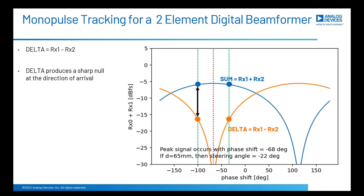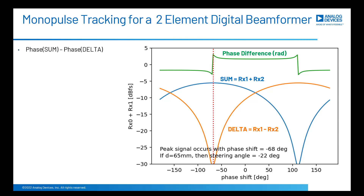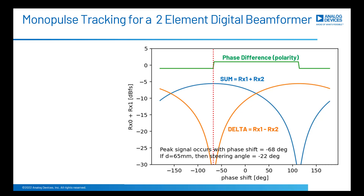Here's the key to monopulse tracking: if we also look at the phase difference between the sum curve and the delta curve, we get a curve that goes from plus pi radians to minus pi radians. The direction of arrival line is exactly at the point where the phase difference switches from negative to positive. The difference between sum and delta tells us if we are off target, and the phase difference tells us which way to move the beam. If the phase difference is negative, increase the phase shift on RX2; if positive, decrease it. We only need the polarity, not the exact angle.